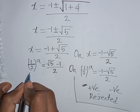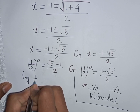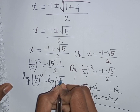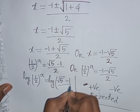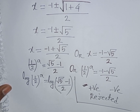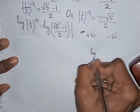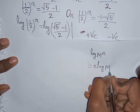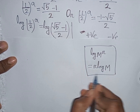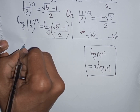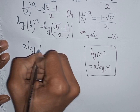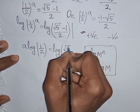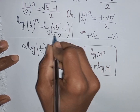Now from the valid case we apply log to both sides: log of (1/2)^a equals log of (√5 − 1) / 2. We apply the rule that log(m^r) = r·log(m), so the power a moves to the front: a · log(1/2) = log((√5 − 1) / 2).